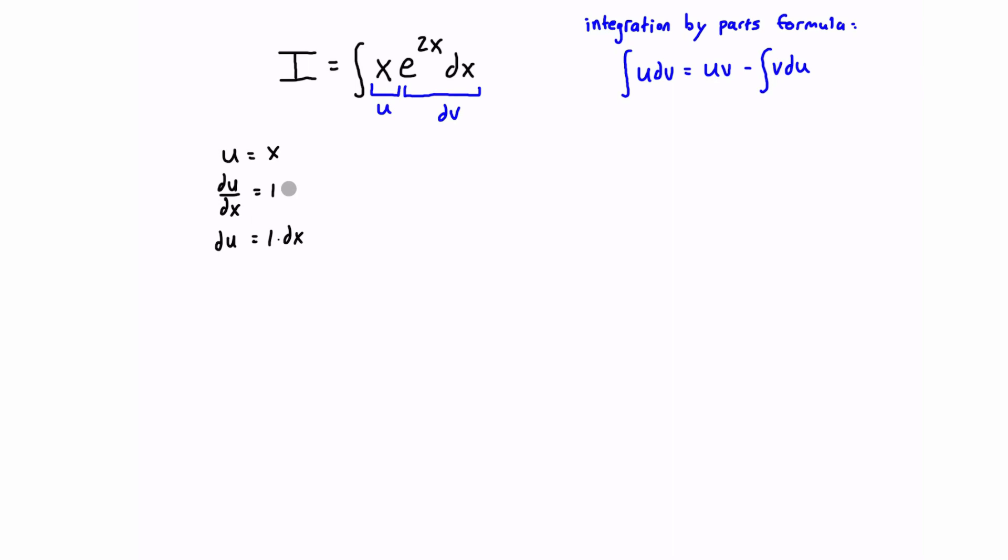Now for the other part here, dv, we can just write that down. We have dv is equal to e to the power of 2x dx. This is what we have just defined right here. What we want to do is we want to take the integral of dv, so the integral of dv is just going to be v, and integral of this stuff...